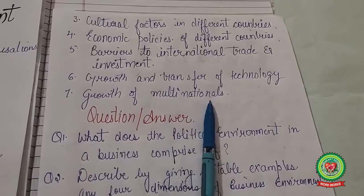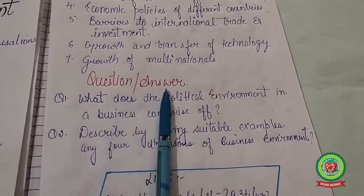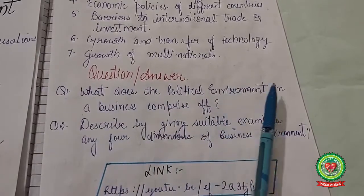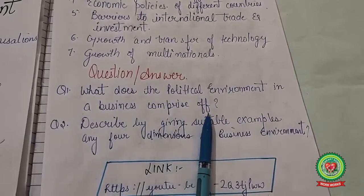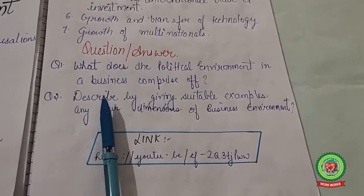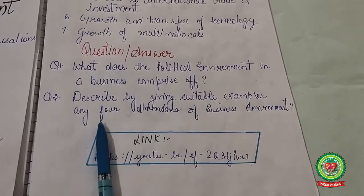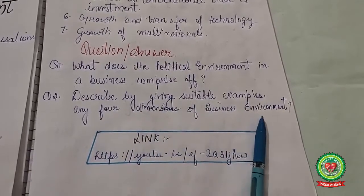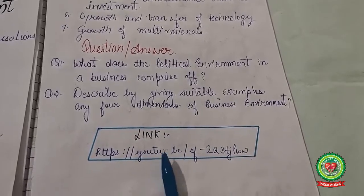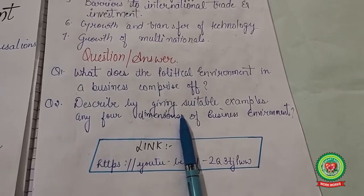Today's questions to write are: What does the political environment in business comprise of? And: Describe by giving suitable examples any four dimensions of business environment. Go through various links on YouTube so that you can write better answers to these questions.